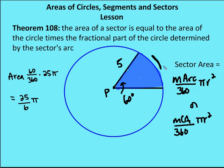The sector area is the measure of the arc over 360 degrees, or the measure of the central angle over 360 degrees. In this case, the sector has a central angle of 60 degrees and the arc measure is also 60 degrees. So we take 60 over 360 times pi r squared, which is the entire area of the circle. A fractional part times the entire area gives our result: 60 over 360 is one-sixth times 25 pi, giving us 25 over 6 pi square units for the area of this sector.